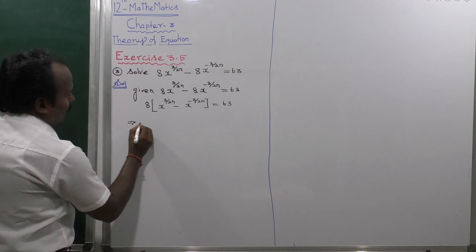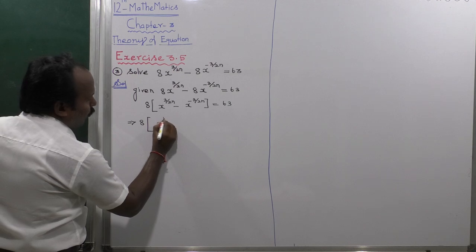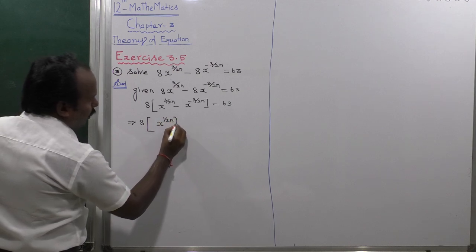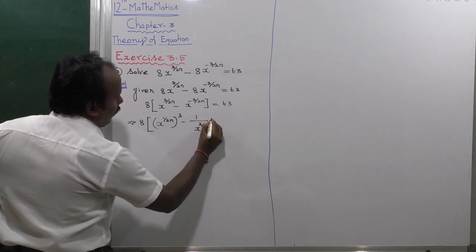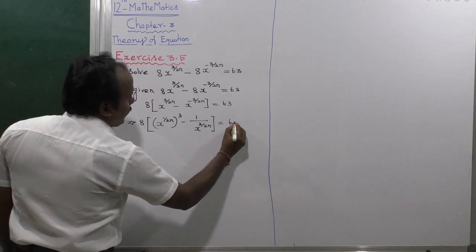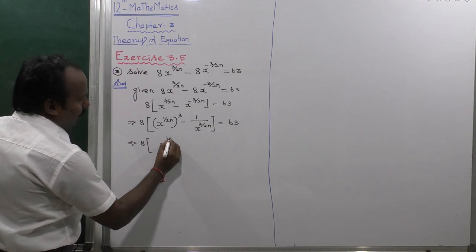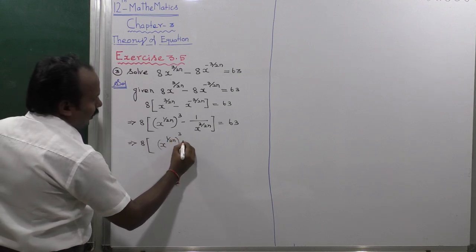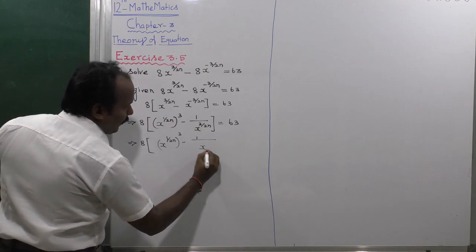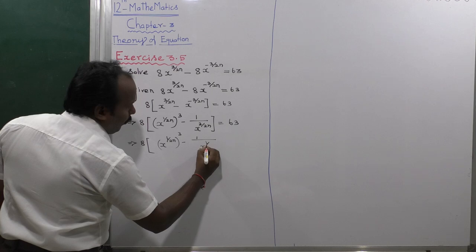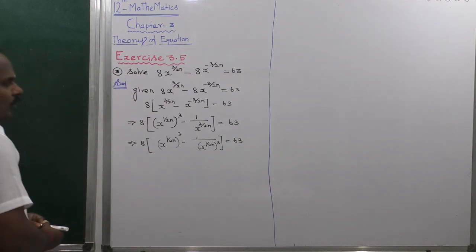First of all, the common value 8 is taken outside: the remaining value x power 3 by 2n minus x power minus 3 divided by 2n is equal to 63. Which implies that 8 into x power 1 by 2n the whole power 3, minus 1 divided by x power 1 by 2n the whole power 3, is equal to 63.